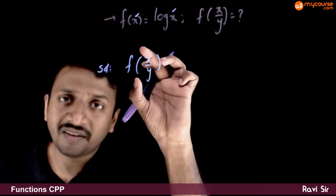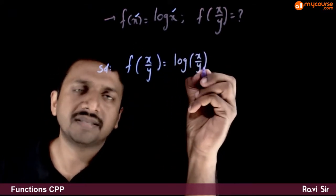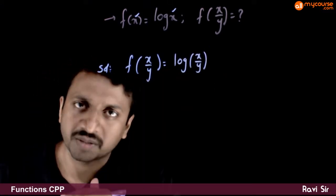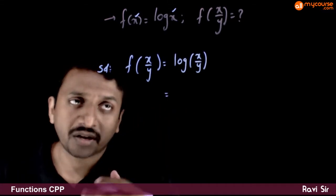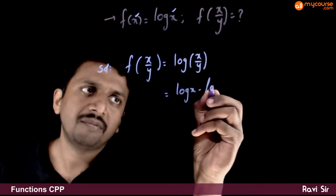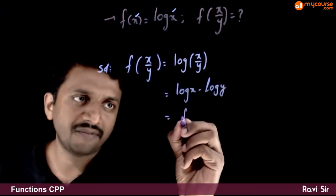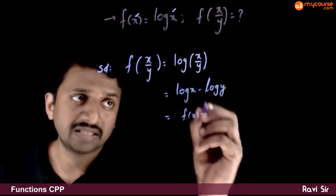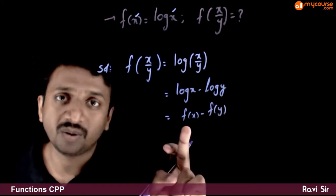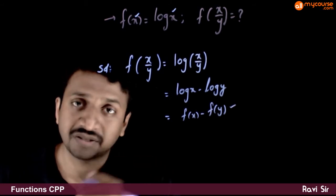So f of x by y is: if x by y goes in, you get log of x by y as the answer. So f of x by y is log of x by y, and by the properties of logarithms, log x by y is nothing but log x minus log y. That is, log x is f(x) and log y is nothing but f(y). So f of x by y is equal to f(x) minus f(y), if f(x) is equal to log x. That is the answer to this question.